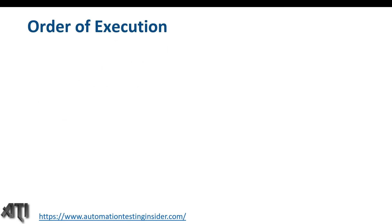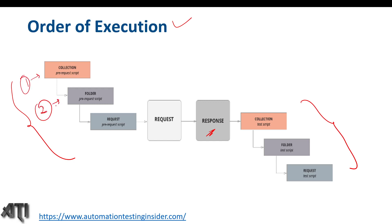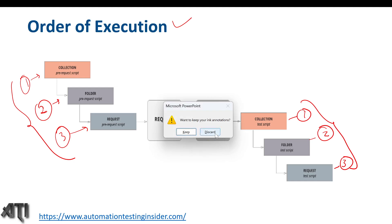Now let's talk about the order of execution. There are three levels where we can put our pre-request script. When we put the pre-request script, the collection level will be executed first, then folder level, and thirdly the request level. Similarly for test script: first collection level, second folder level, and third request level. This is the order of execution between pre-request script and test script. Now let me show you a demo with the Postman tool.